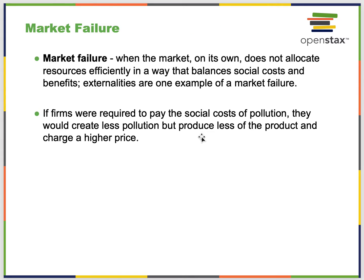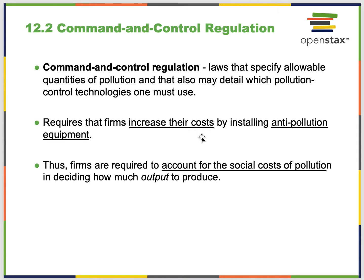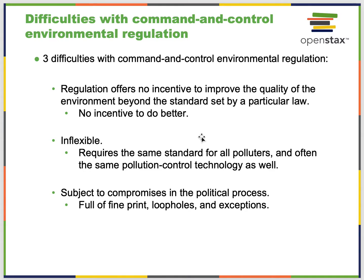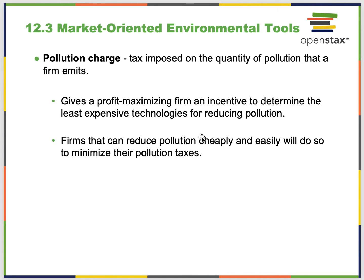One thing governments can do is command and control regulation — laws that specifically limit pollution. Firms are required to increase their costs by installing scrubbers on smokestacks and accounting for the social costs of pollution in deciding how much to produce. There are three difficulties: no incentive to improve beyond the standard set by law; it's inflexible, requiring the same standard of all polluters; it's subject to compromise in the political process with loopholes and exceptions; and enforcement is also difficult depending on the type of pollution.